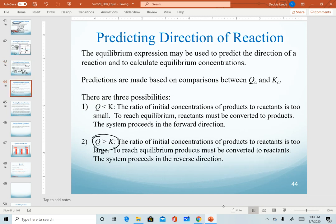The next scenario would be if we calculate that Q is greater than K. So again, K is the goal. The reaction is going to keep going until it reaches the ratio of products to reactants that gives us K. In this case, it means that the value of Q needs to decrease.